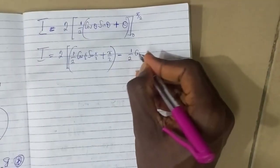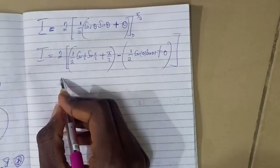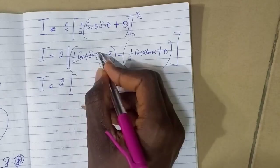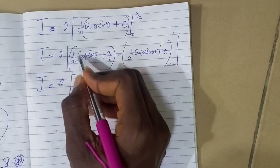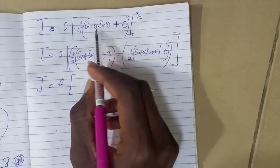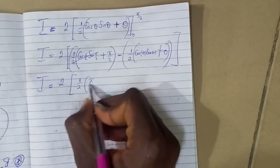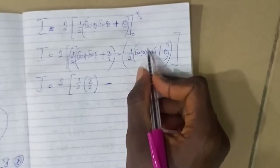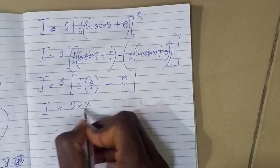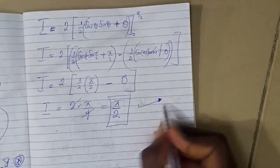After inserting the upper and lower limits: the upper limit gives (1/2)(0)(sin π/2) + π/2 = π/4 (since cos π/2 = 0, that term vanishes). The lower limit gives zero. So I = 2 × (π/4) = π/2. This confirms that the final answer is π/2, which matches what we obtained from the calculator earlier. Thank you, guys.